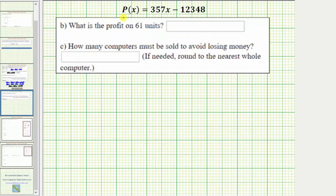Notice how we have our profit function here on the top. So part b, what is the profit for 61 units? To answer this question, we substitute 61 for x.